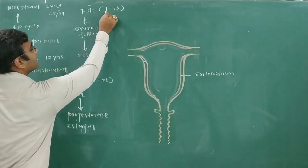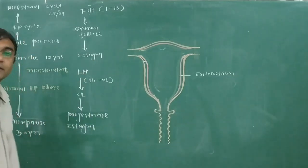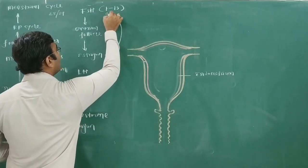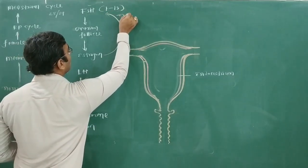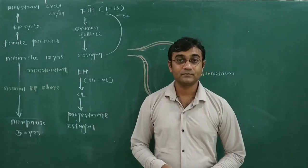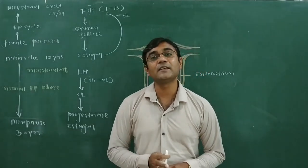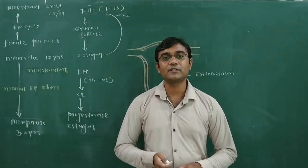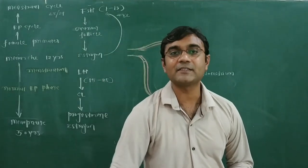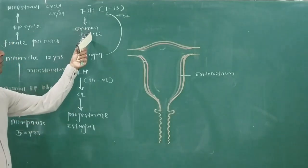From days 1 to 13: FSH increases, so the ovarian follicle develops and produces estrogen. As estrogen concentration increases inside the female blood, under negative feedback control FSH concentration decreases. Then estrogen increases and FSH decreases further, so the ovarian follicle ruptures.